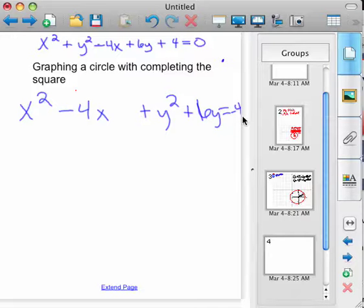The reason you do that is so that we can go ahead and complete the square on the x's and on the y's. If you remember completing the square, you take your middle term and divide it by 2 and square it.